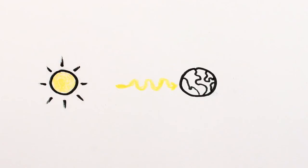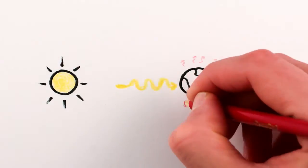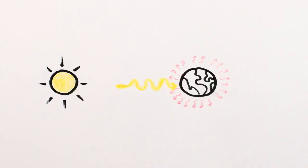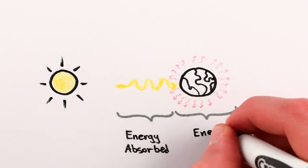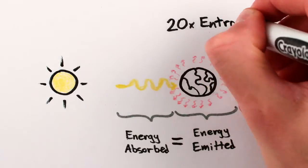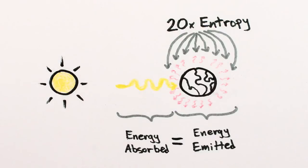For every visible photon we receive, the Earth radiates about 20 infrared photons out into space. Even though there's a balance of energy in with energy out, the entropy of the energy has gone up 20 times.